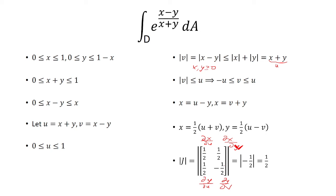And now you just find the determinant. 1 half times negative 1 half is negative 1 fourth, minus 1 half times 1 half is 1 fourth. So negative 1 fourth minus 1 fourth is negative 1 half. But then you take the absolute value to get positive 1 half.